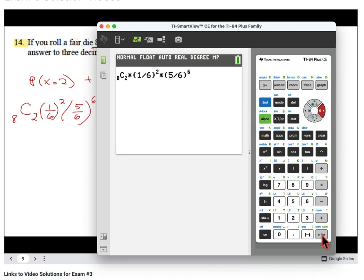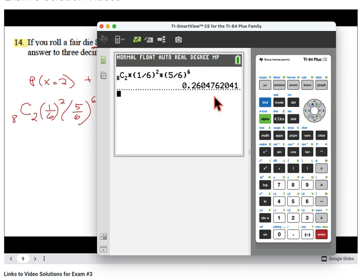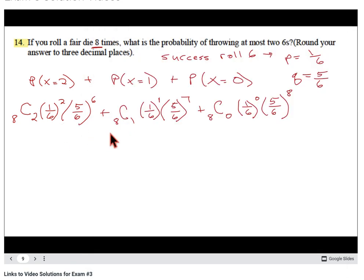You could keep going and put a plus and get the next one, but I'm going to do each one just in case you make a mistake. If you have it all entered in the calculator, one little error somewhere will throw you off. They want the answer to three decimal places, so I'm going to go to four so that I can make sure my rounding is good. I'm going to do 0.2605.